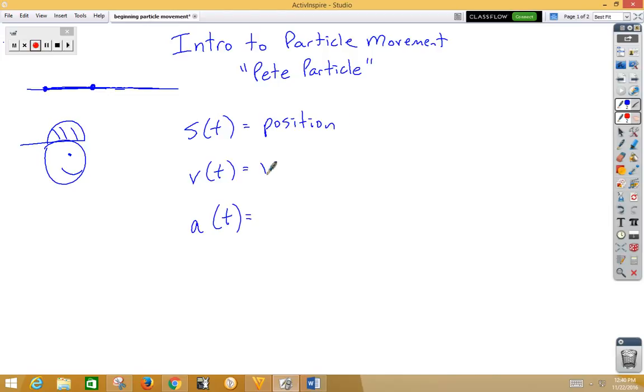V of t is velocity, and velocity is going to be talking about is Pete moving to the right or is Pete moving to the left.